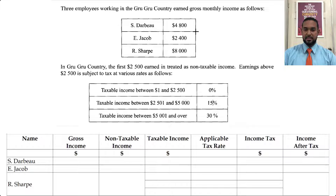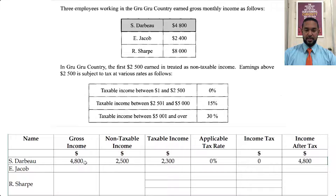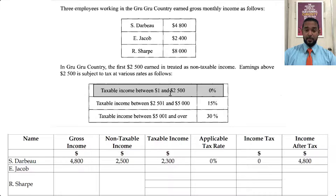Let's start with S. Darbo. Gross income is $4,800. Non-taxable income is $2,500. Subtracting those gives taxable income of $2,300. According to this table, taxable income up to $2,500 is not taxed, so the tax rate applicable is 0%, income tax is therefore $0, and income after tax is the full $4,800.